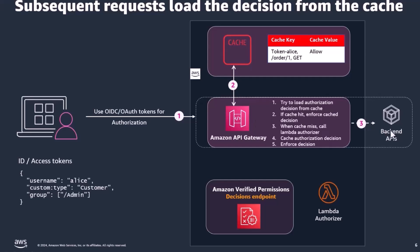What is worth noting is that Amazon Verified Permissions and the Lambda authorizer are not triggered during this process. As a result, you save latency and cost because these services are not triggered.